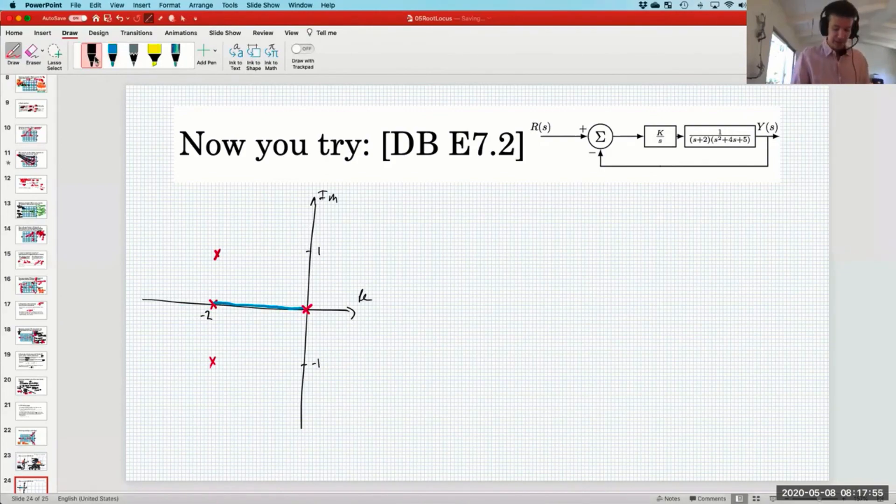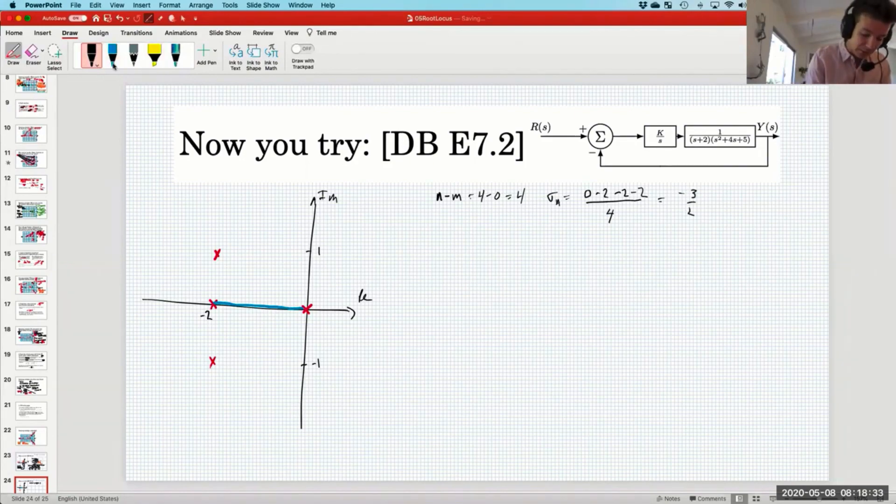Let's go ahead and work out the asymptotes. So we need the number of open loop poles is 4 and the number of open loop zeros is 0, so that tells me I need 4 asymptotes. To get their center of mass, I'm going to average the locations of all of the poles. There's one at 0 and there's one at negative 2, and then there are two complex conjugate ones, but the imaginary parts of those complex conjugate poles will cancel, so I'm not even going to include them. I'm dividing that by 4, so this looks like negative 3 halves. So in green, for my asymptotes, I have a center of mass right about there.